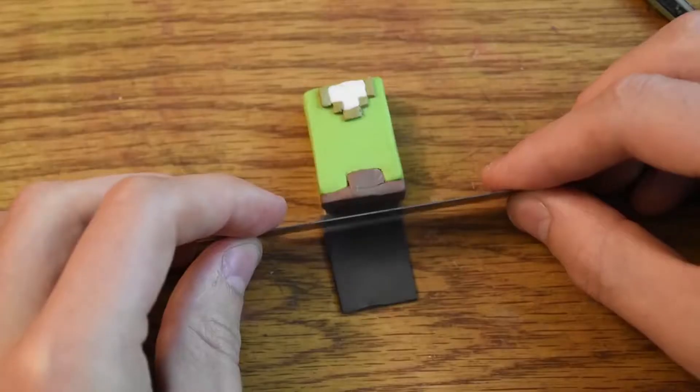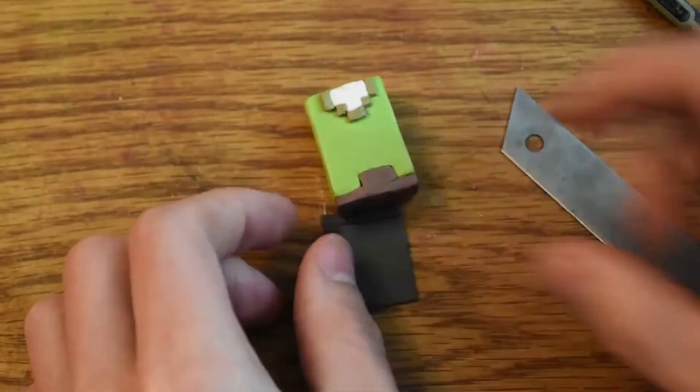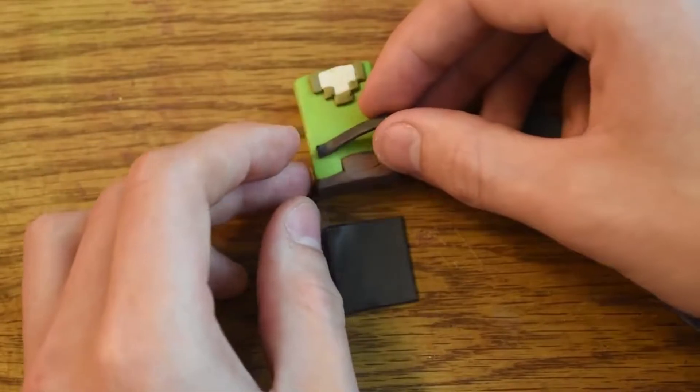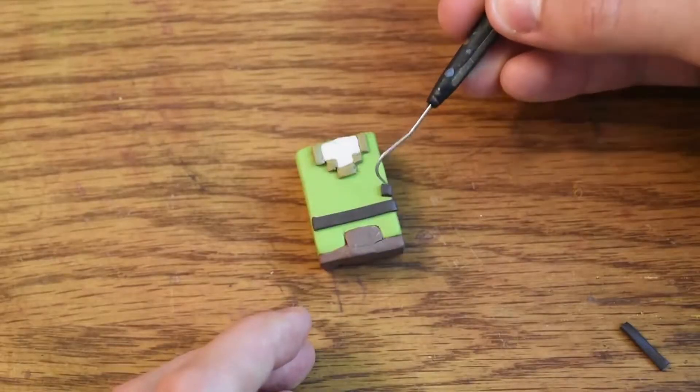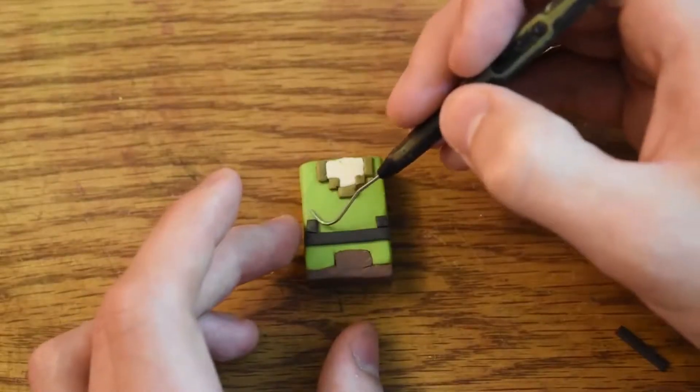Now we need some of this black sort of colored clay, it's sort of a brownish black color. And we can add some more pixels of it, this is like the belt.